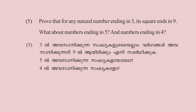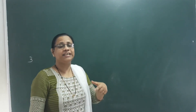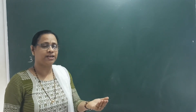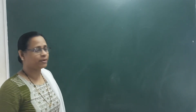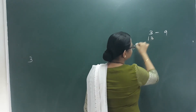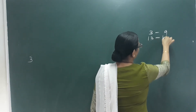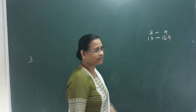Next question: Prove that for any natural number ending in 3, its square ends in 9. What about numbers ending in 5? And numbers ending in 4? For example: 3 squared is 9, 13 squared is 169, 23 squared ends in 9. That's the pattern we need to prove.